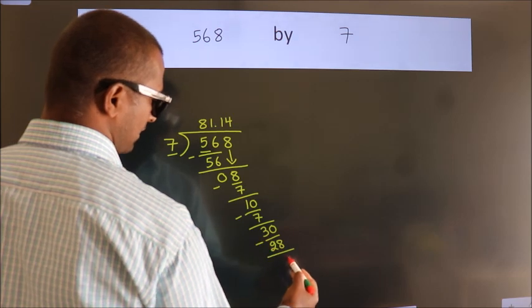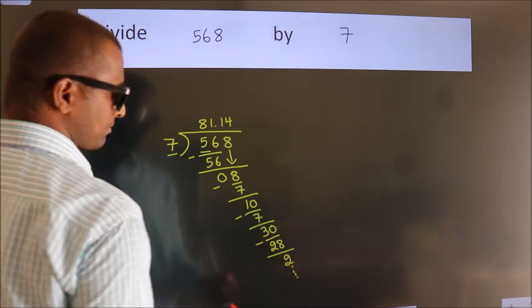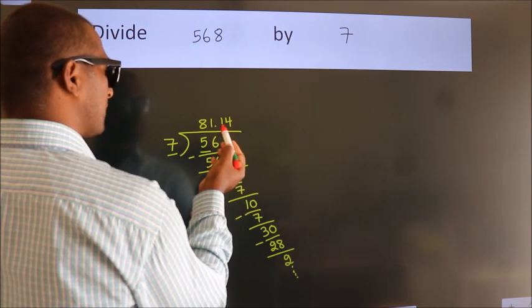Now we subtract, we get 2. And the division continues. It is enough if we do up to 2 decimal places.